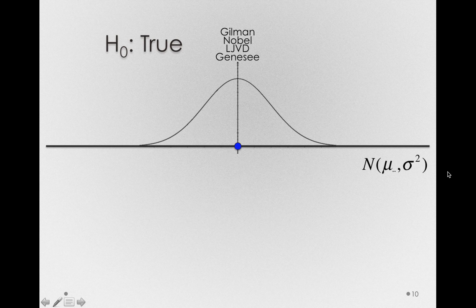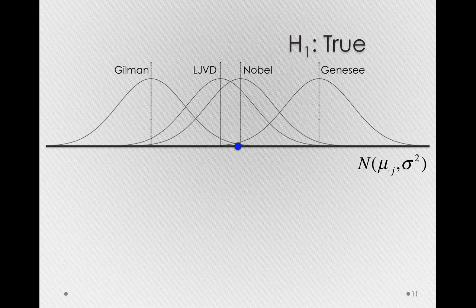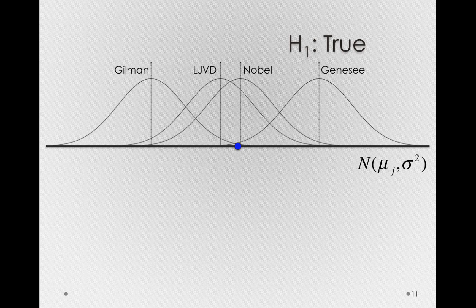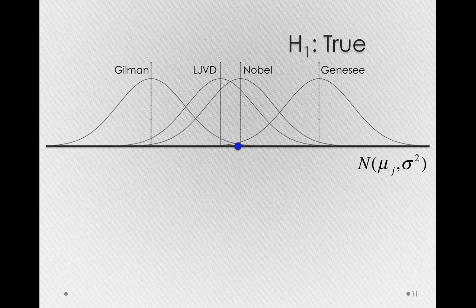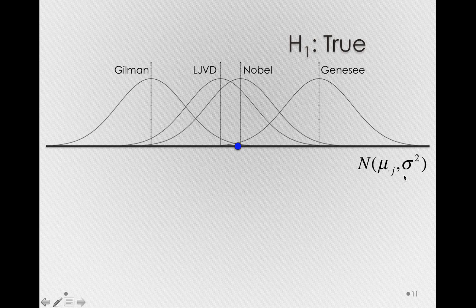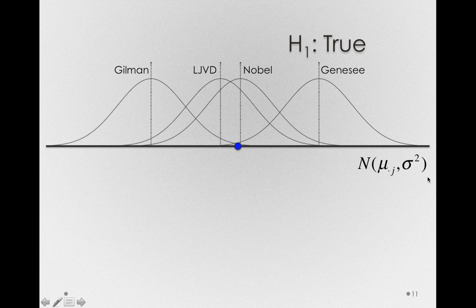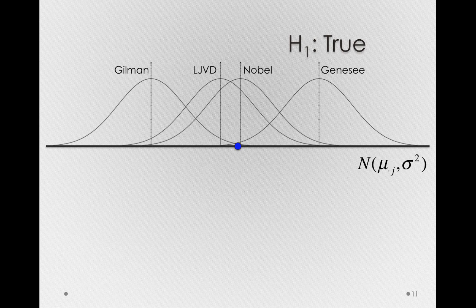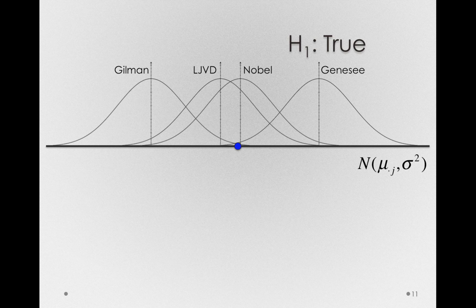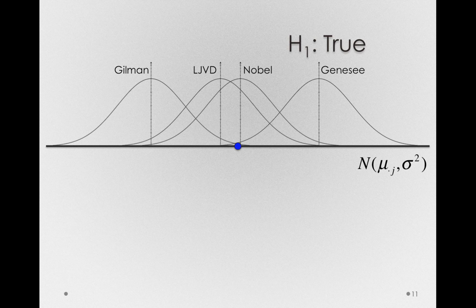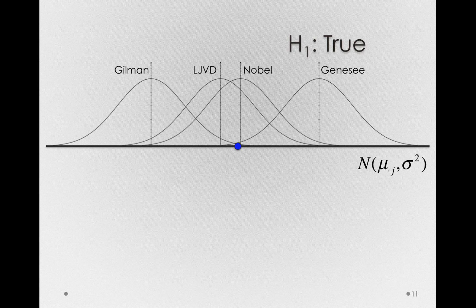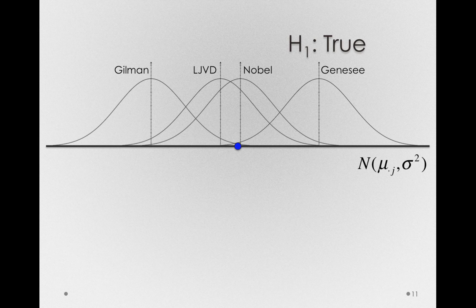Notice what happens when I represent the situation where H₀ is false, or H₁ is true. I've spread out these populations to the degree that our sample was, assuming our sample gave us a perfect estimate. But notice something: we gain a subscript for the mean to represent the mean of these different groups. We actually have an offset, so we have J terms, but the variance is the same. This is what our analysis of variance model is assuming the population looks like. Even if we find differences, we're still assuming that the spread within those populations—the different routes to campus—is equal. That is the homogeneity of variance assumption, a critical assumption on which our inferences rest.